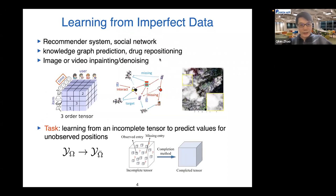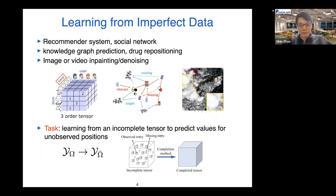In many applications we have multi-dimensional data. For example, in a recommendation system we have user, item, and time-based purchase history — data with multi-dimensional structure. Unlike traditional machine learning problems with huge numbers of samples where we can train deep neural networks, in knowledge graph data we know some connections or relations between entities, and our goal is to capture information from such data and make predictions for missing values. The data is multi-dimensional and we don't have a large number of samples.